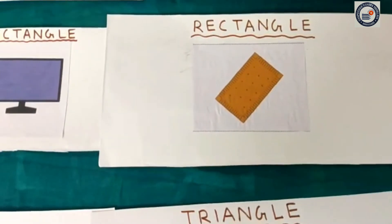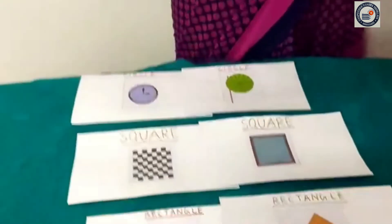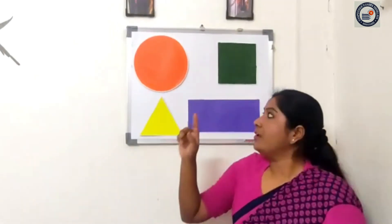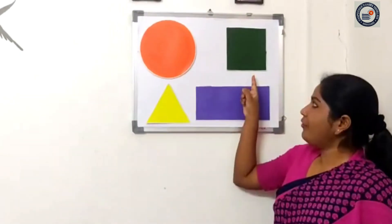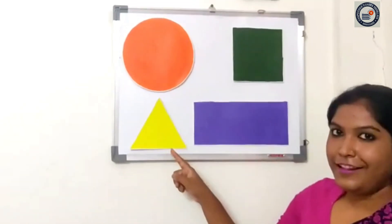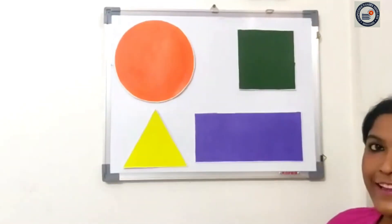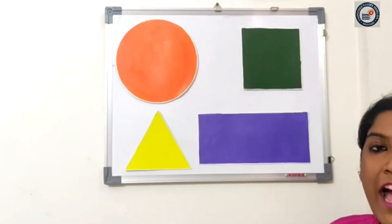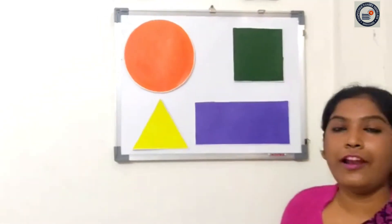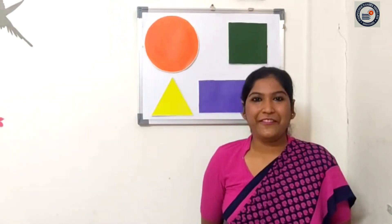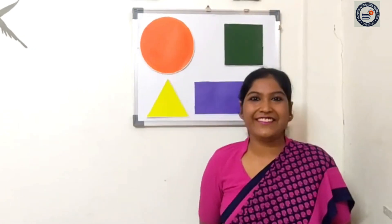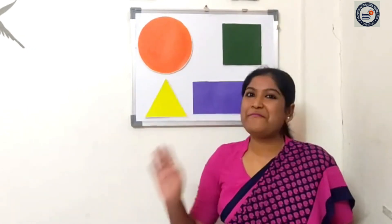So we have learnt about four shapes — that is circle, square, triangle and rectangle. I hope you all have enjoyed the class on shapes. Okay students, thank you. Bye-bye.